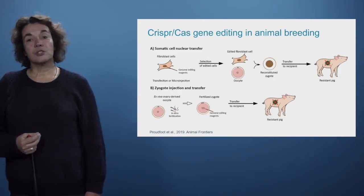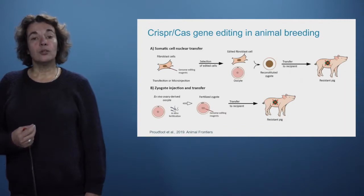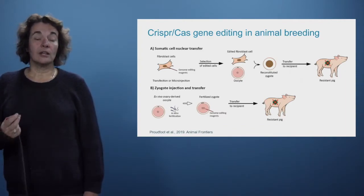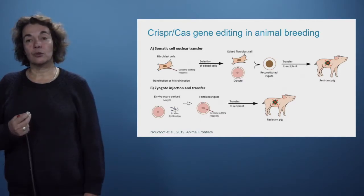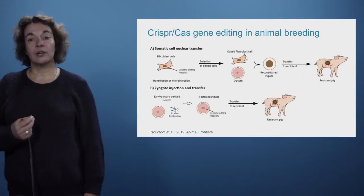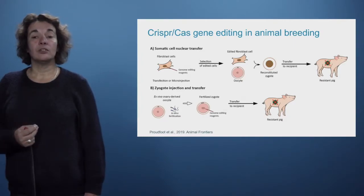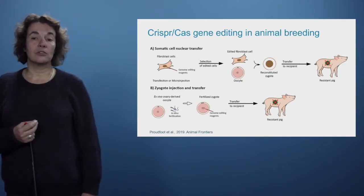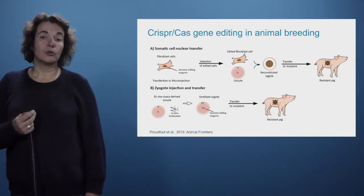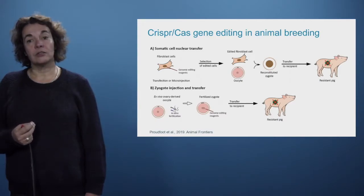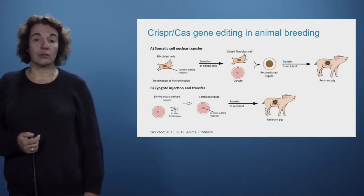A second approach is zygote injection. In this case we don't talk about cloning. You take an oocyte, in vitro fertilize it with sperm, then add the genome editing reagents to the zygote and transfer it into a recipient mother. The offspring can be a resistant pig — I say 'can be' because you cannot select zygotes for the ones that are gene edited versus those that are not, so it is less certain than the first technology.